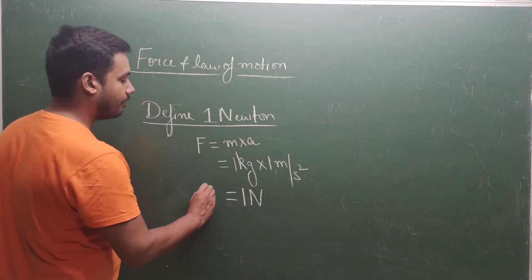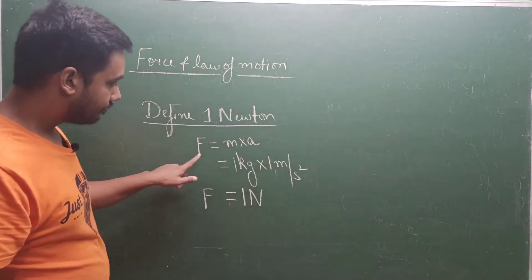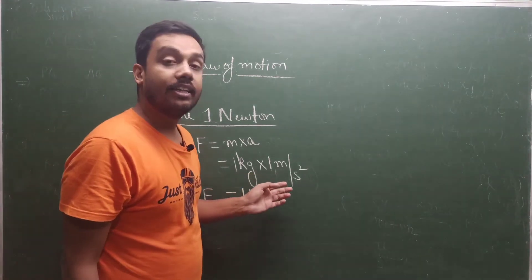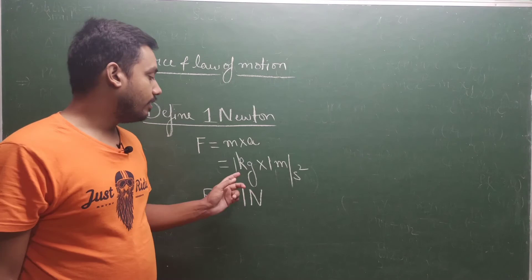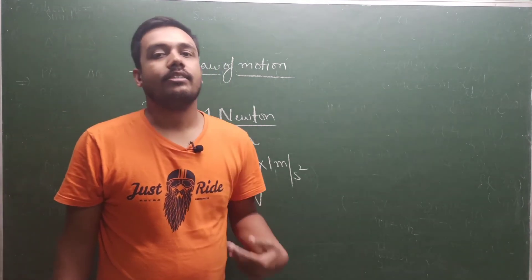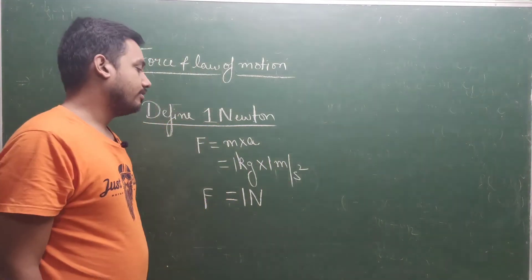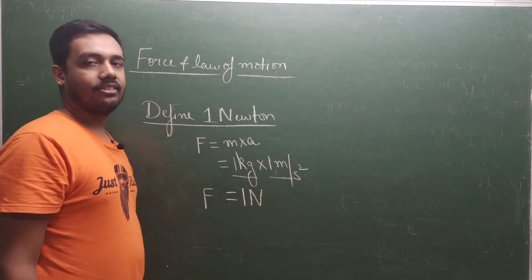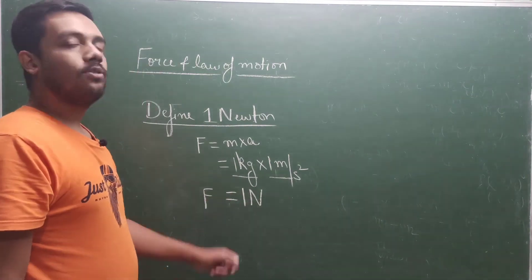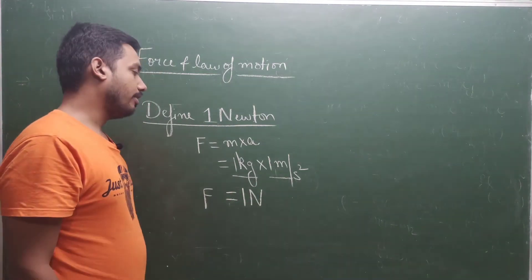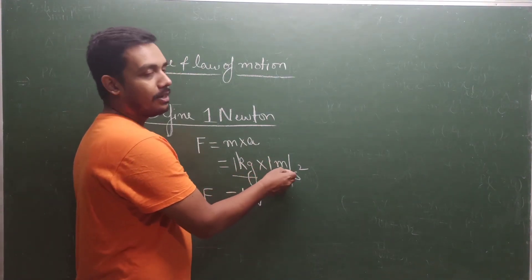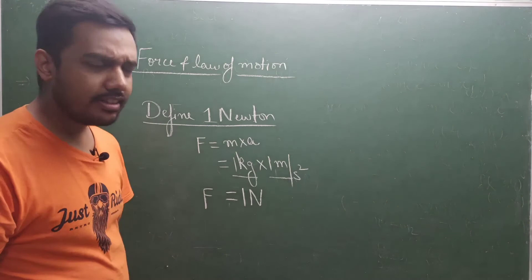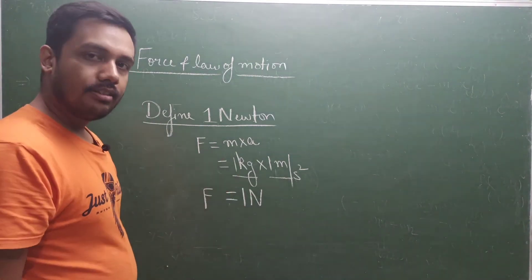So how can you define 1 Newton? Force is said to be 1 Newton when unit mass of an object experiences unit acceleration. When a unit mass gets accelerated by unit acceleration, then force acting on it is said to be 1 Newton. When 1 kg object gets 1 meter per second square acceleration, then the force applied on that object is 1 Newton. You don't have to memorize it, you just have to understand the definition.